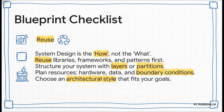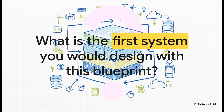Let's pull all of that together with a quick checklist for our blueprint. First, always remember: system design is the how, not the what. Always start by seeing what you can reuse. Decide on a clear structure — either layers or partitions. Plan carefully for your resources and for when things go wrong. And finally, pick an architectural style that is made for what you're trying to achieve. And there you have it: the basic way of thinking like a system architect. We've laid out the tools and all the key decisions. So I'll leave you with this question — now that you have the blueprint, what's the first system you would start to design?